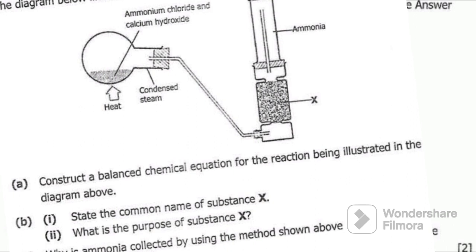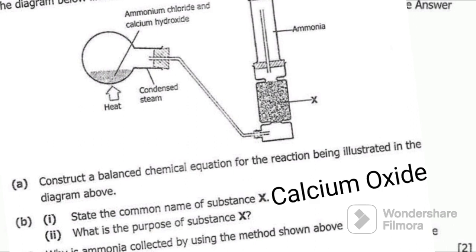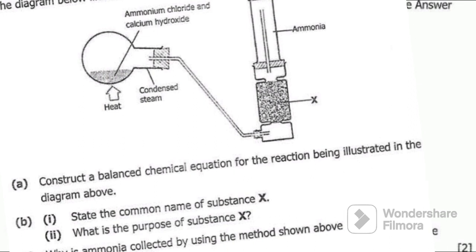Question B1: state the common name of substance X. The common name of substance X is calcium oxide. Calcium oxide is also known as quicklime.